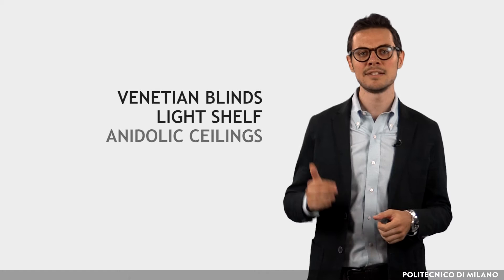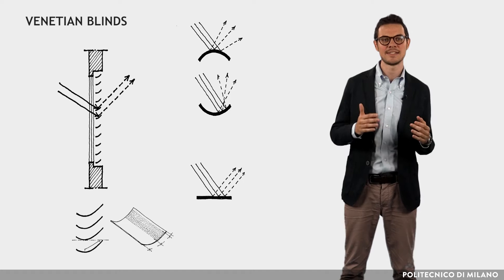In this regard, the main systems to better control natural light are Venetian blinds, light shelves, and anidolic ceilings.